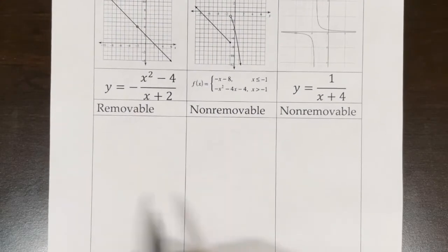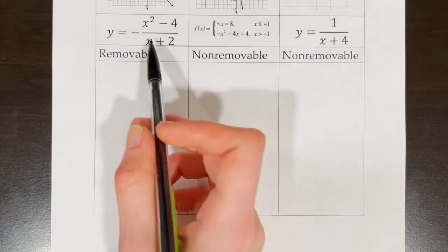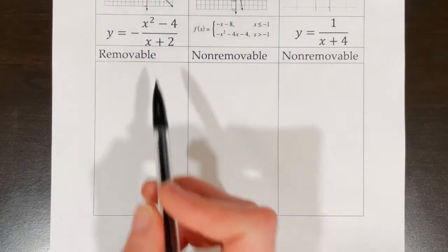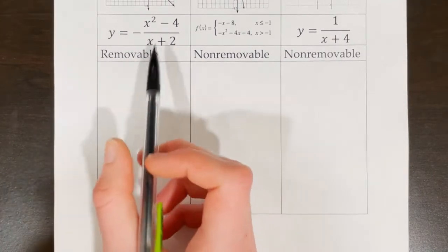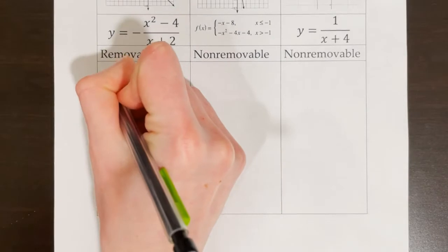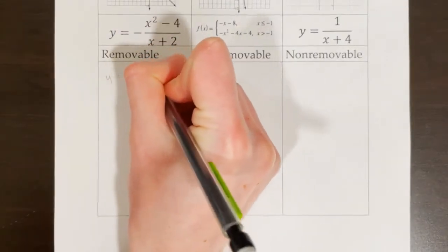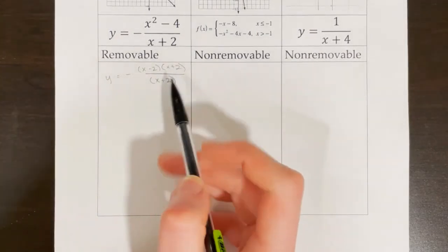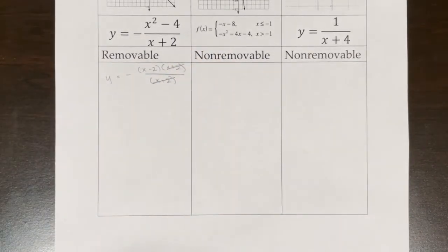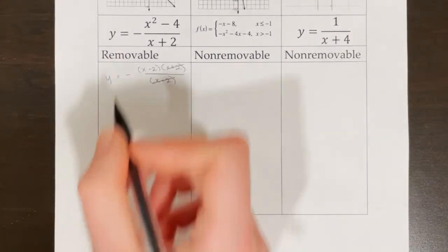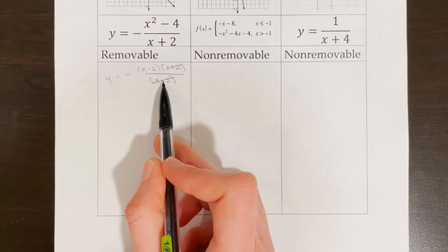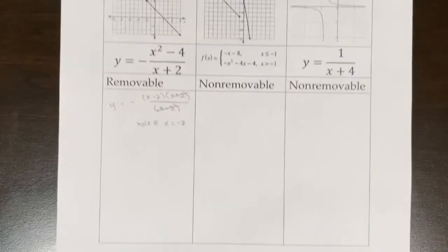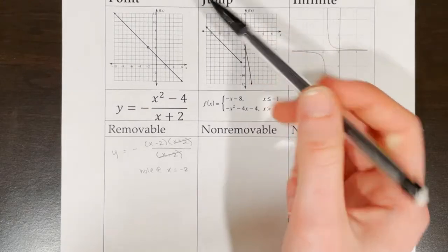Now I want to work out how you would identify discontinuities if you were just given these different functions without the graphs. For a rational function, my instinct is always to factor first. Once I factor this one, I see there is a common factor in the top and bottom — that common factor is x plus 2. When I cross off that common factor, that means there's a hole at x equals negative 2. The more College Board way to say this: we have a point discontinuity at x equals negative 2.